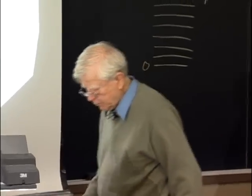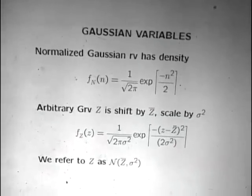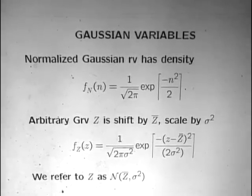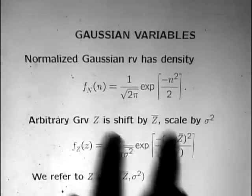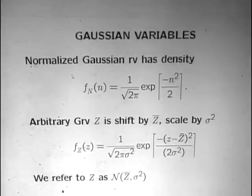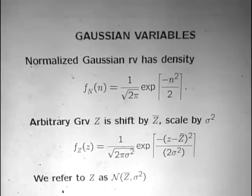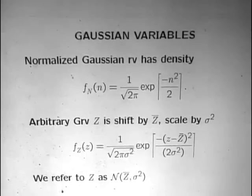Somehow we have to figure out what these joint densities are. When we don't know what to do, we make a simple assumption: the random variables at different points in time of the noise are Gaussian. A normal Gaussian random variable has density (1/√(2π)) e^(−n²/2)—a nice bell-shaped curve with mean 0 and variance 1.